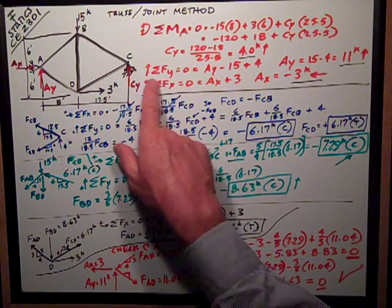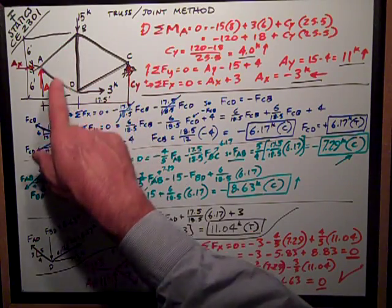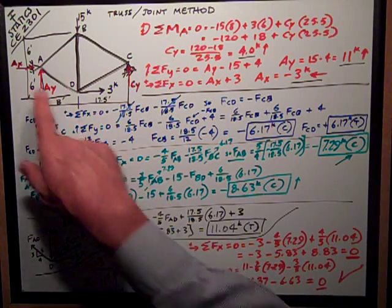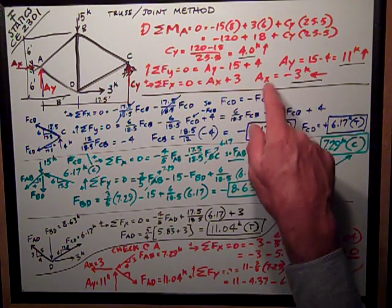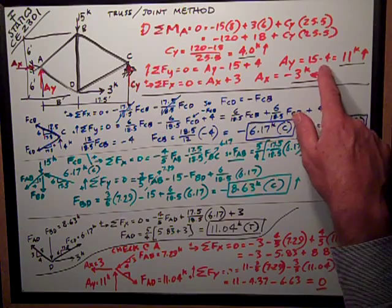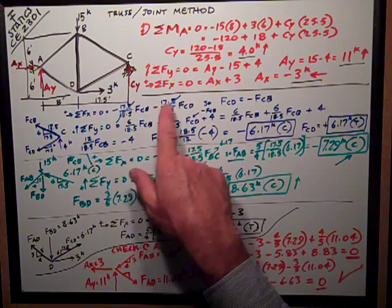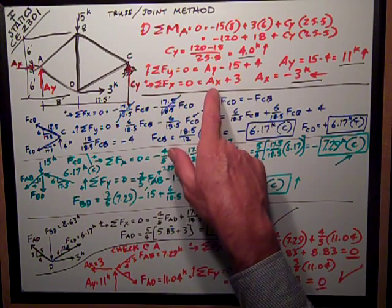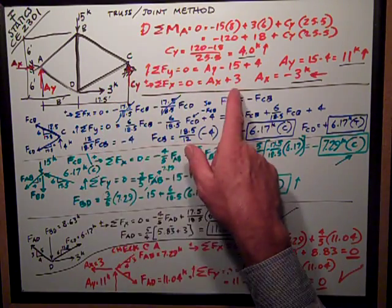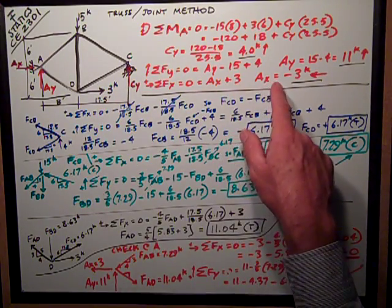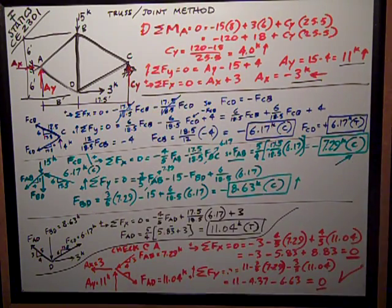Sum of forces in the Y, positive is up, zero equals AY force, unknown, minus 15 applied force, plus the four kips I just solved for at C. So AY is equal to 15 minus 4, or 11 kips up. Sum of forces in the X direction, the only thing I have is AX. I've assumed it positive to the right, plus my positive to the right applied force, so that makes AX three kips negative, which means it's really to the left.